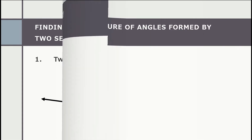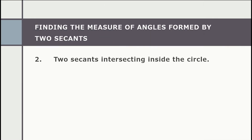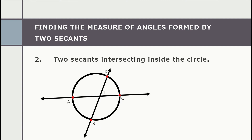Number two: two secants intersecting inside the circle. Here we take the arc intercepted by the angle and its opposite angle, add the two arcs, and take half of the sum. For the given example, angle one intercepts arc CD and the opposite arc is arc AB. We add the two arcs first, then multiply the sum by one half.